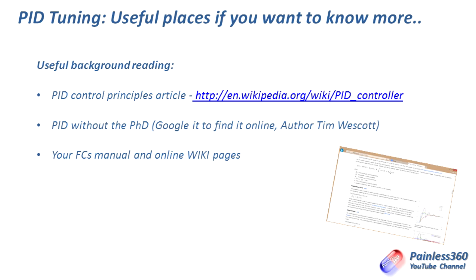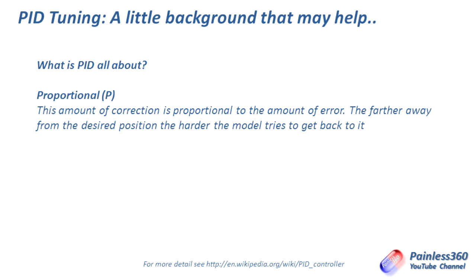So now let's talk about what PID actually is and how those pieces work. The first part of the PID loop is P, which stands for proportional. Proportional's job is probably the easiest to explain, demonstrate, and tune. Proportional's job is to actually correct any error — so if the multicopter is supposed to be horizontal and one side is down, proportional's job is to push that back up as quickly as it can.